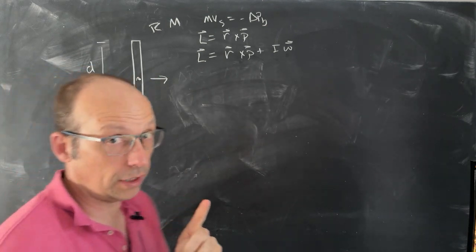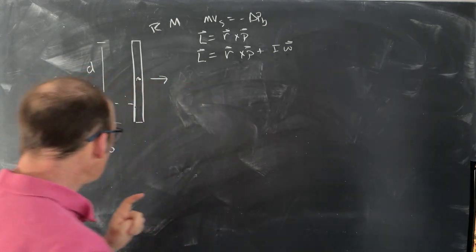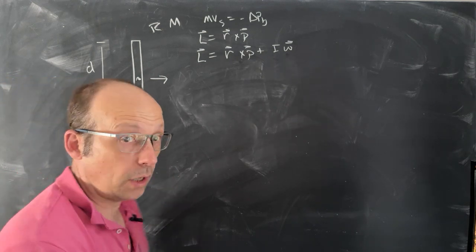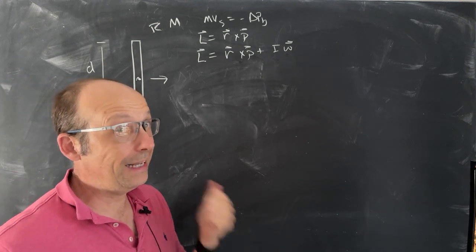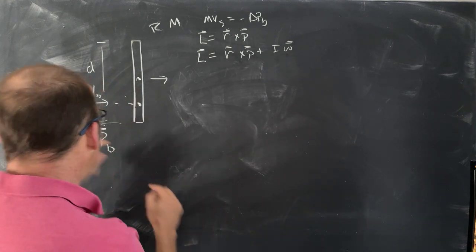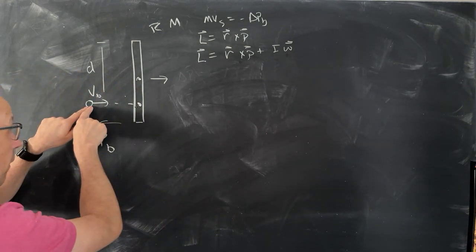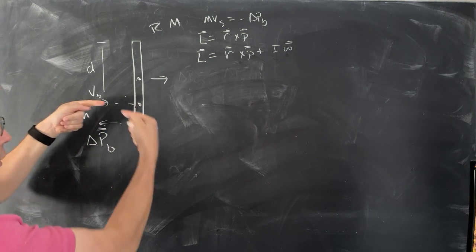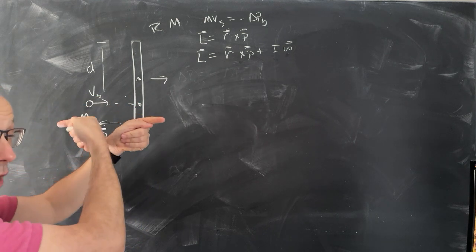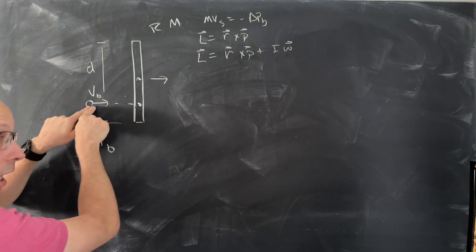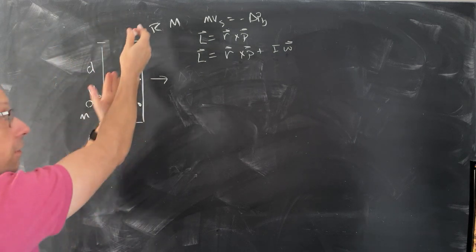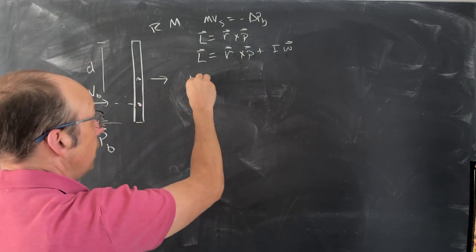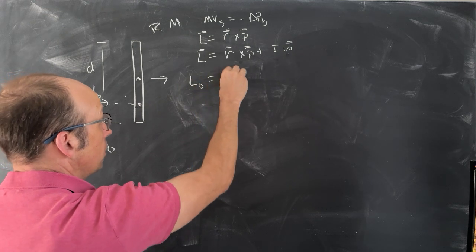Here is the trick. If I pick the contact point — the location where the ball hits — to calculate the angular momentum, I get a bonus. The angular momentum of the ball, since it's moving right into that point, means R cross P is always zero. So the initial angular momentum of the system is zero, since the stick isn't moving either. So L_initial equals zero.